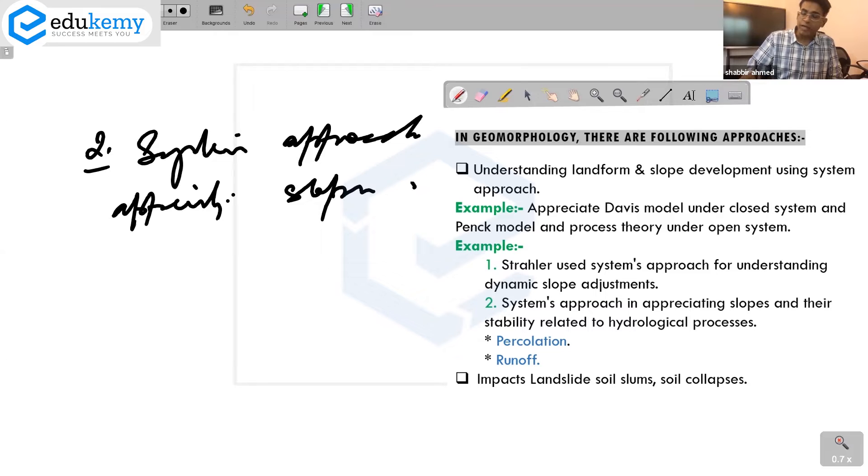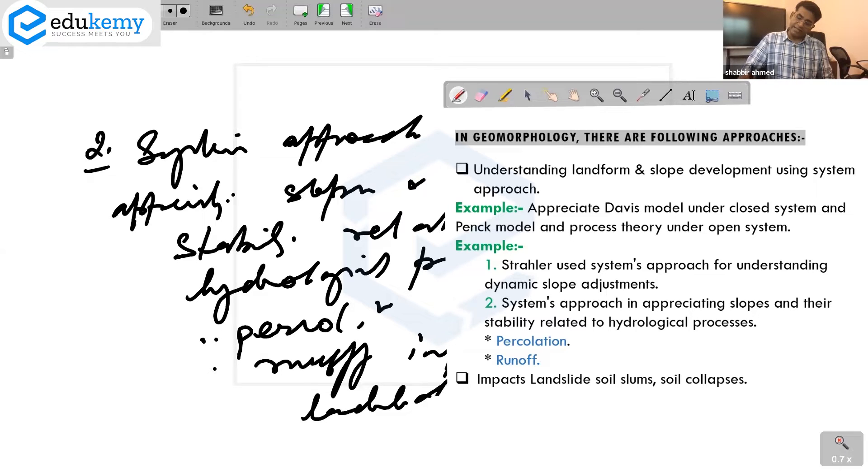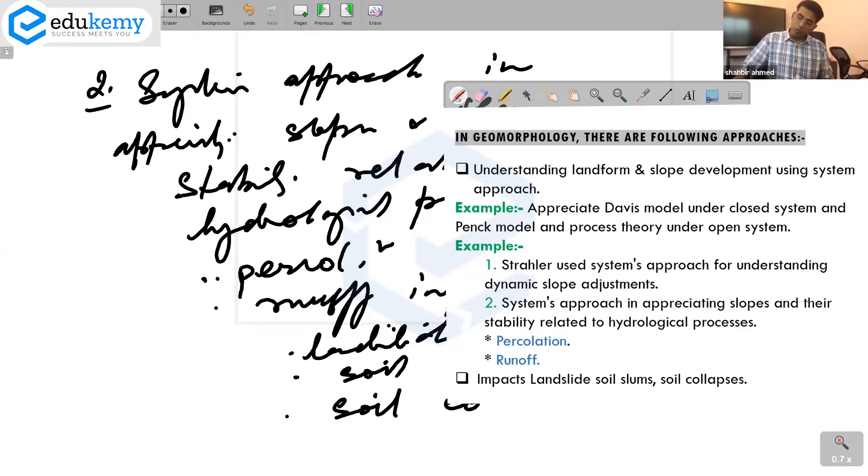The next, number two, is systems approach in appreciating slopes and their stability related to hydrological processes. How percolation, how runoff impacts landslides, how it impacts soil slumps, how it impacts slope collapses.